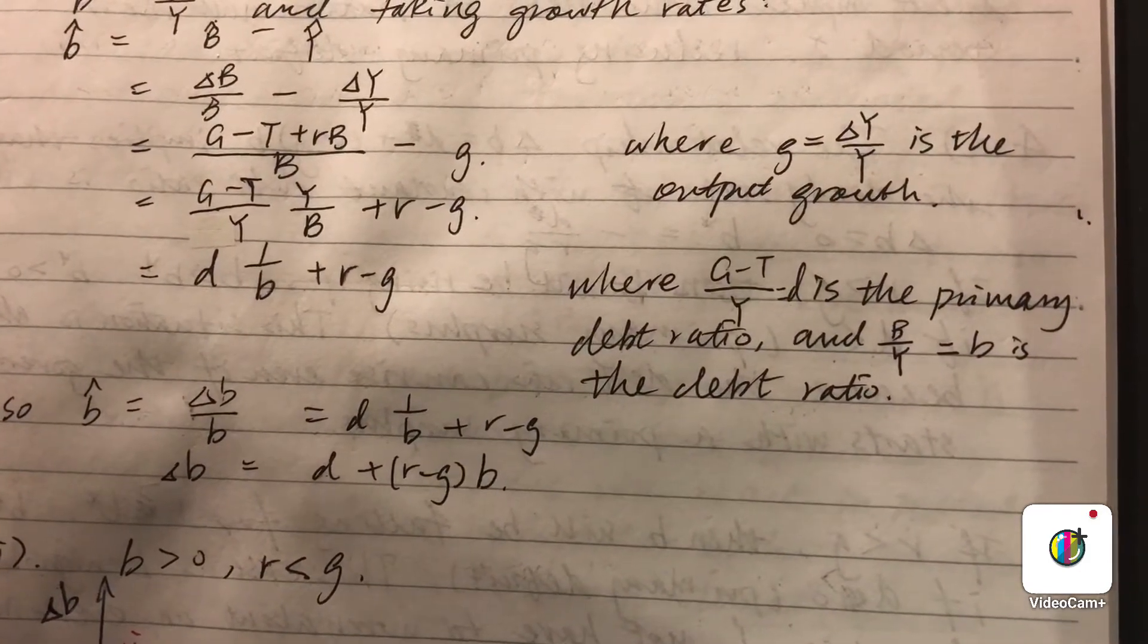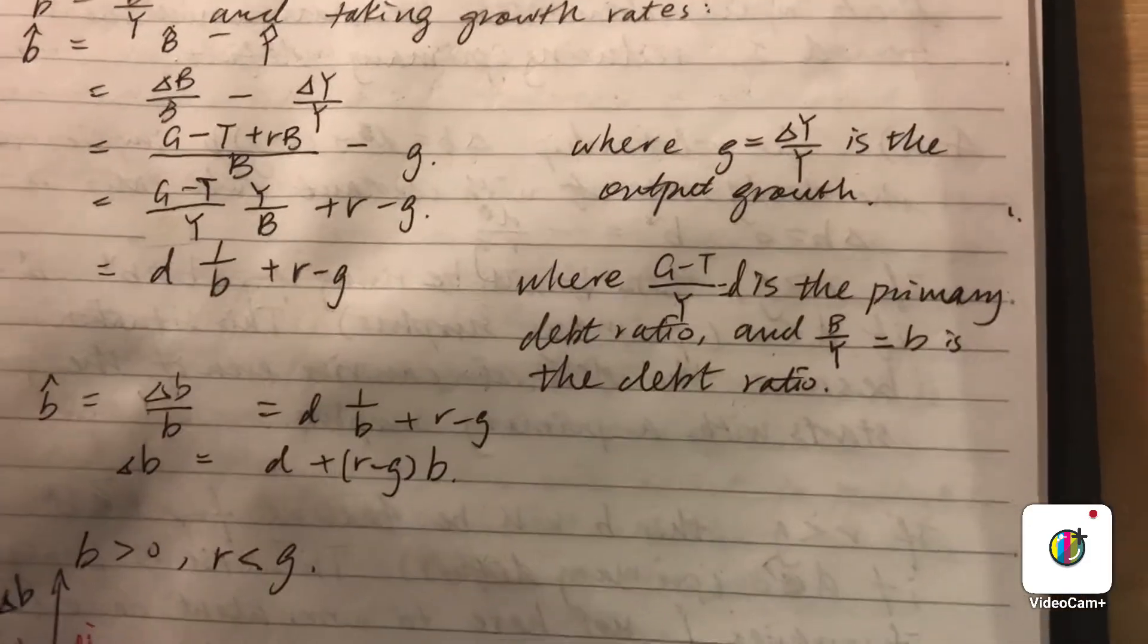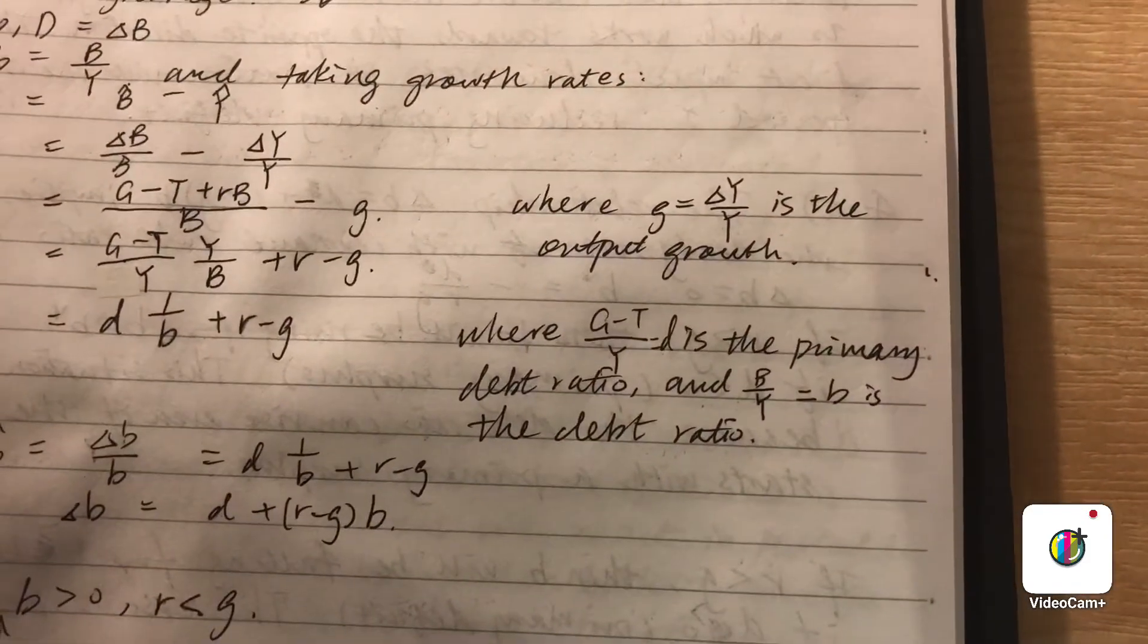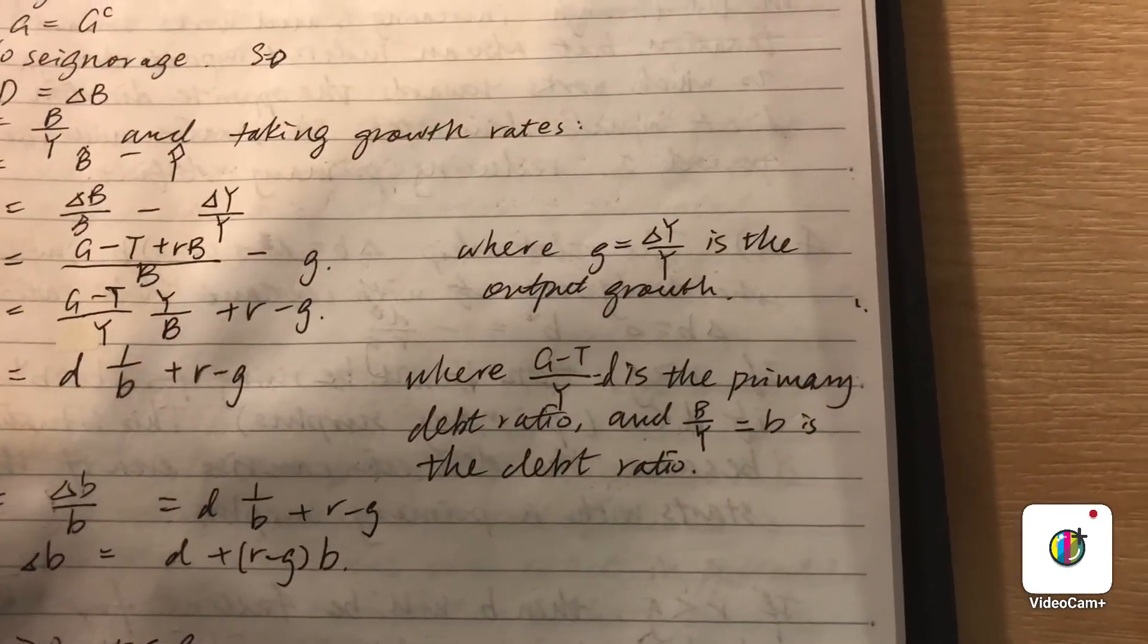Now we substitute Delta B in from the budget constraint, and also we define g as the growth rate of y.